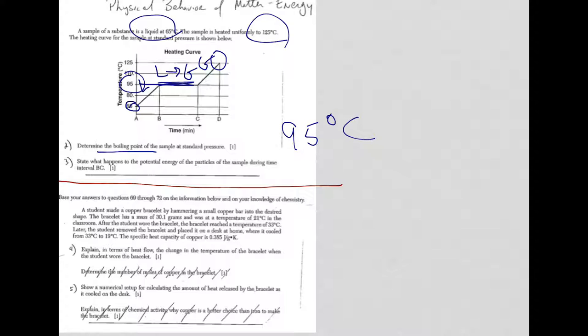For question two, state what happens to potential energy now of the particles during the time interval BC. Time interval BC is right here again. It's at the phase change. So at the phase change, second time now in 2015, we have the same question. And we're at a phase change, temperatures being held constant. That means kinetic energy is constant. So where's that energy going? It's potential energy increases once again.